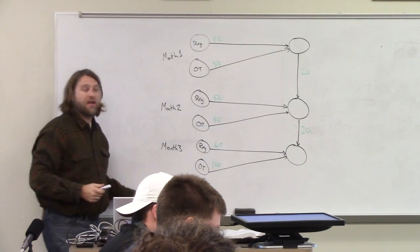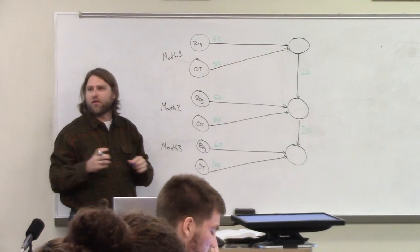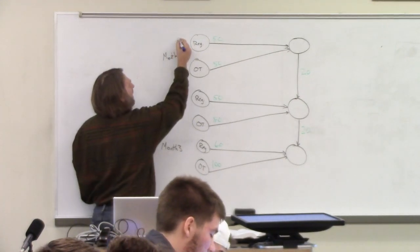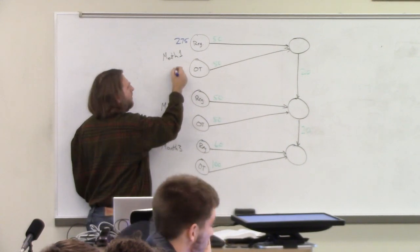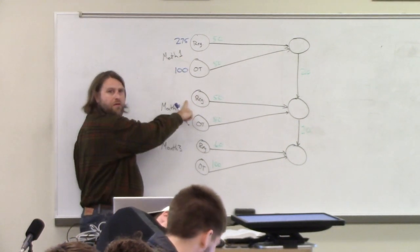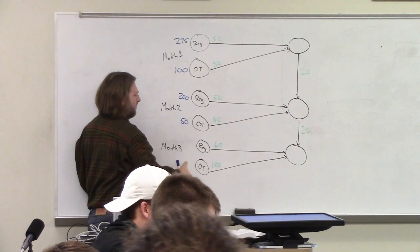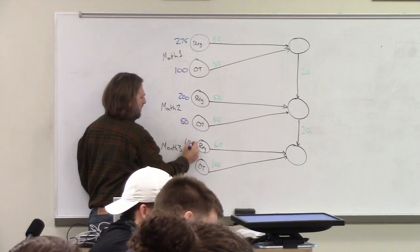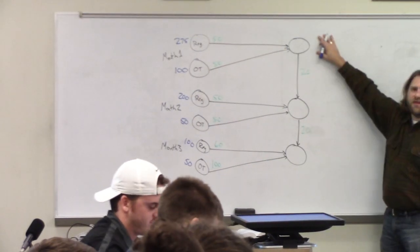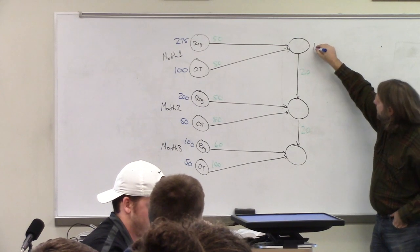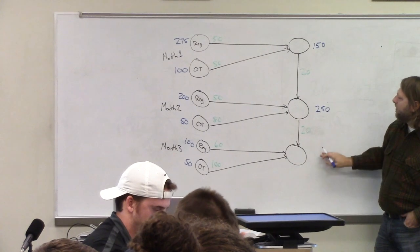And then finally we need our supply. How much can we do in month one regular? 275. In overtime? In month two? 200. And month three? 100. And what are our demands for each of these months? Month one: 150. Month two: 250. Month three: 300.